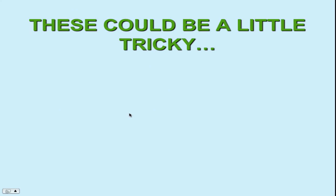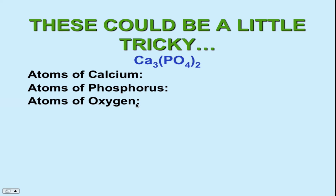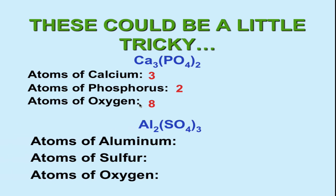Try Ca₃(PO₄)₂ — separate it all out and pause the video. Calcium: you should have three, there's no coefficient. From the parentheses: two phosphorus and eight oxygen. Now do Al₂(SO₄)₃ — pause the video and see if you can figure it out. Aluminum should be two — the subscript says two and there's no coefficient. Sulfur should be three. And oxygen you should have twelve.